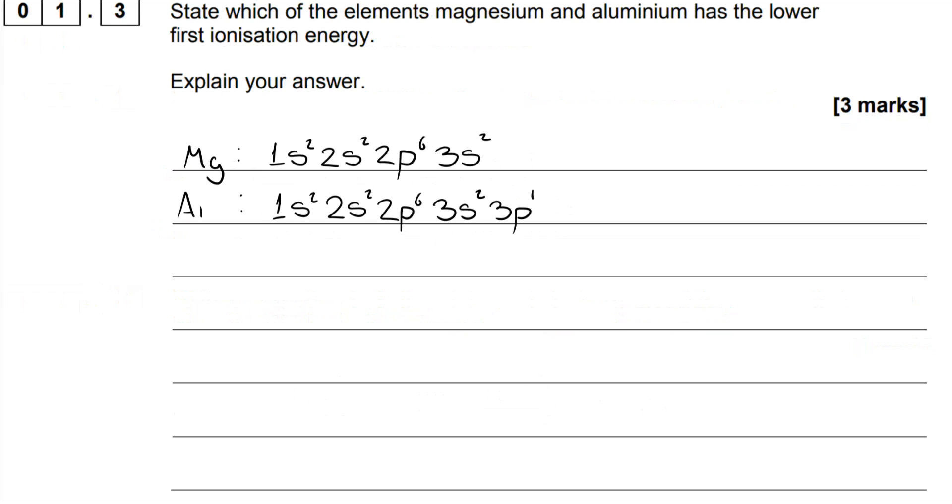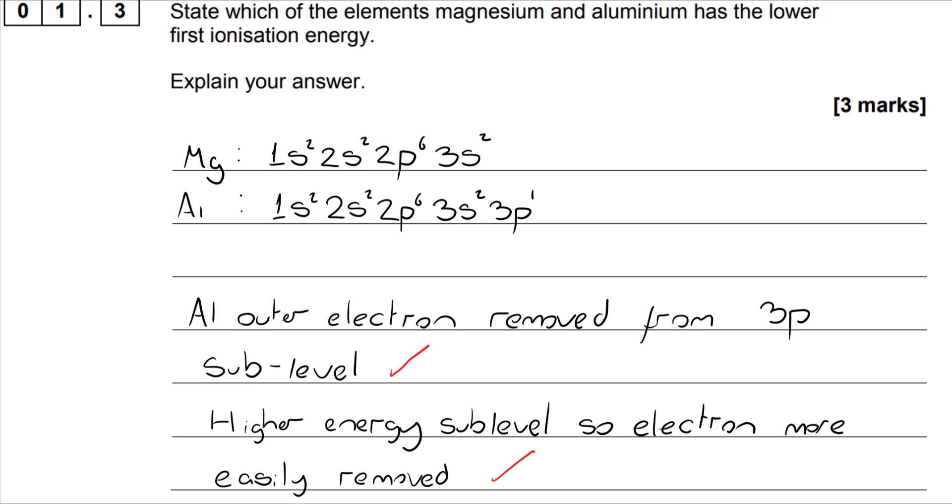Now what we can see here is that aluminum's outer electron is being removed from a 3p sublevel, whereas magnesium's is being removed from 3s. So from this we can then recognize that aluminum's outer electron is being removed from a higher energy sublevel. Therefore less energy needs to be applied for it to be removed, and the aluminum therefore has the lower first ionization enthalpy.